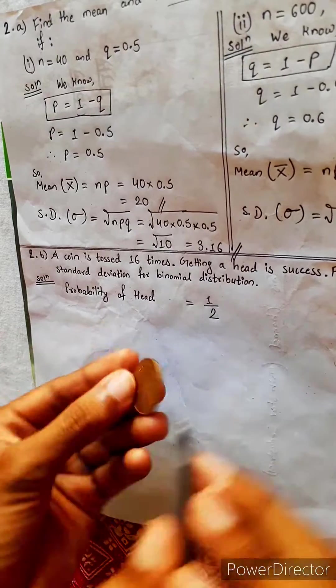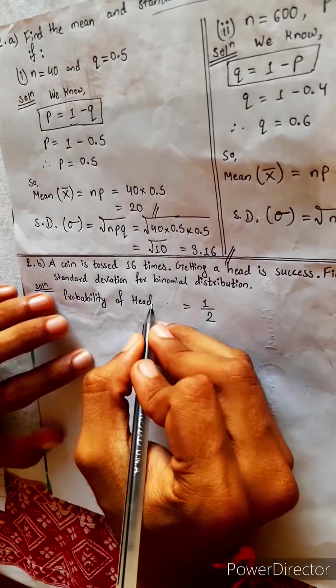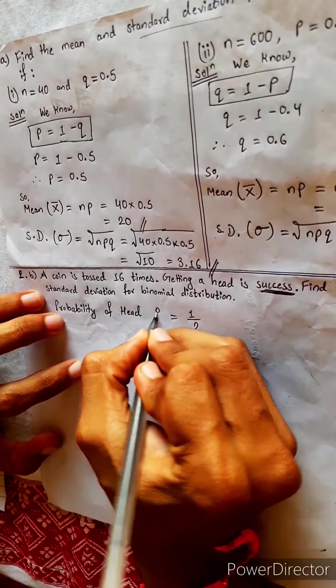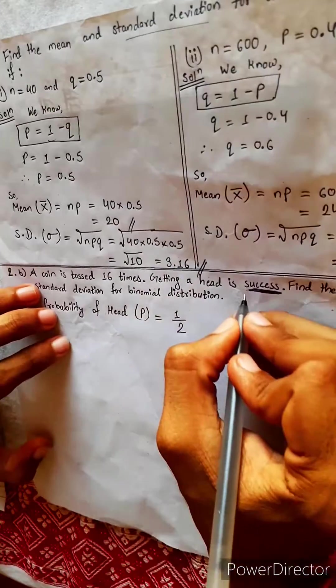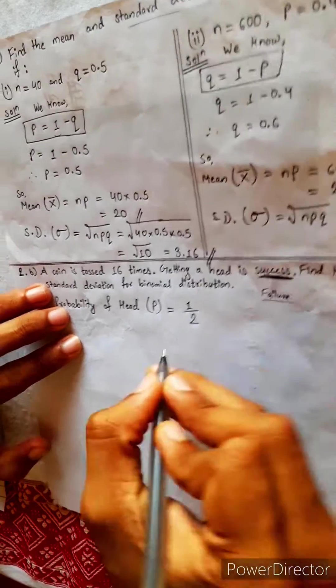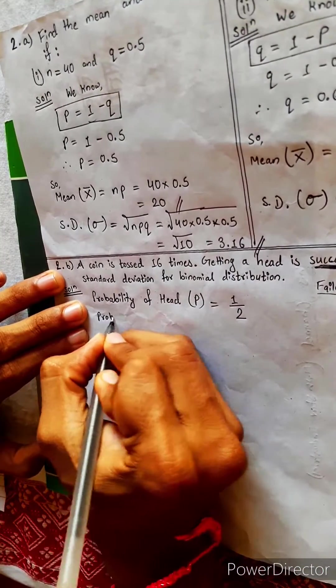In probability, this success is represented as p, and failure, which is opposite of success, is represented by q. Probability of tail means failure, which we represent by q.